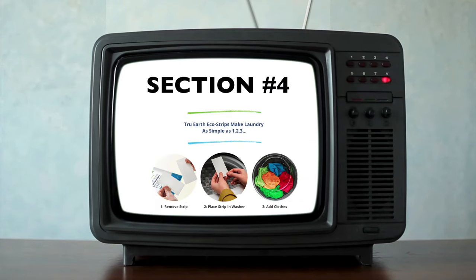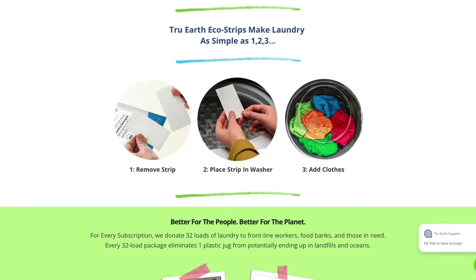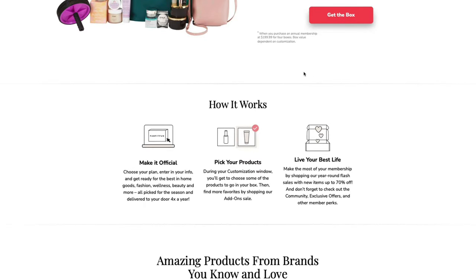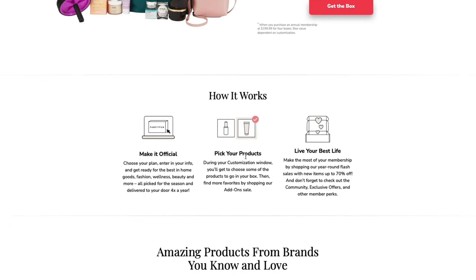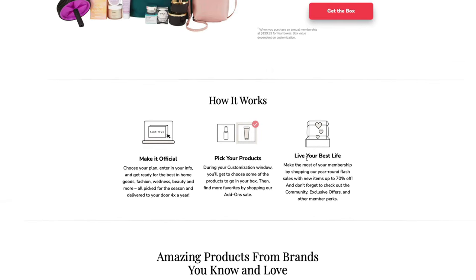The next section is 'How It Works.' We want to show potential customers the specifics — step-by-step instructions if applicable. I'll use True Earth, my brand, as an example: 'True Earth eco strips make laundry as simple as one, two, three. One: remove a strip. Two: place strip in the washer. Three: add clothes.' Pretty straightforward. Another great one is FabFitFun — a subscription box: you choose your plan, you pick your products, and you live your best life. If your product needs an explanation on how it works, do that here.